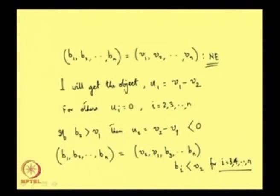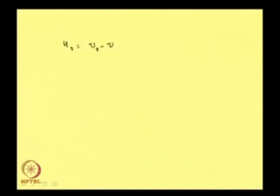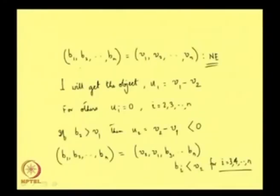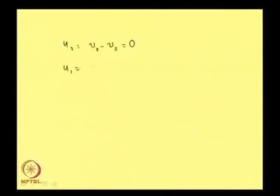I am claiming that this is a Nash equilibrium. In this configuration of bids, it is player 2's bid of V_1 which is the highest, so player 2 gets the object. But what is his payoff? It is V_2 minus V_2, because player 1 has submitted the second highest bid which is V_2. So player 2's payoff from this equilibrium is 0. Player 1 is not getting the object so his payoff is also 0, and this is true for other players as well.